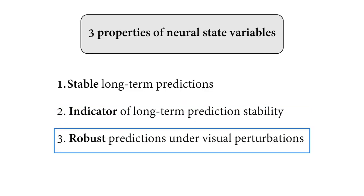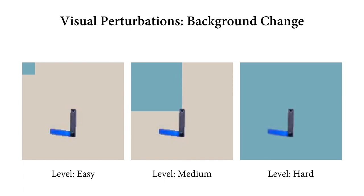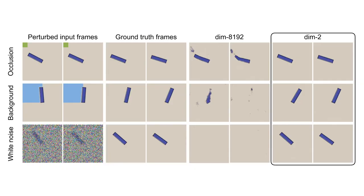The final property of our neural state variables is that they can help produce robust long-term predictions against visual perturbations. In particular, we applied three types of visual perturbations on the input video frames during test time with different difficulty levels. First, occlusion aims to simulate camera occlusions by covering a certain portion of the input frames with a randomly generated color square. Second, background change aims to simulate background color change by covering a certain portion of the input frame background with a randomly generated color square, without covering the object itself. Third, white noise aims to simulate possible sensor noises by adding random Gaussian noises on the frames with zero mean and different levels of standard deviations. The quantitative results clearly demonstrate the strong robustness of models on the neural state variable space across all levels of perturbations.